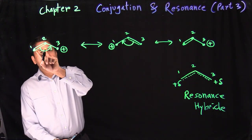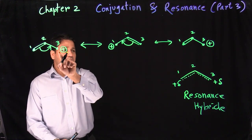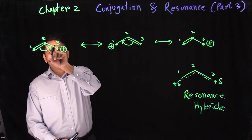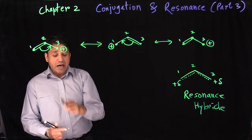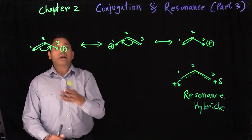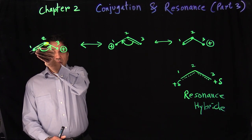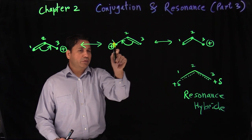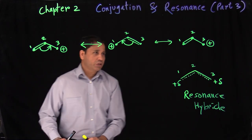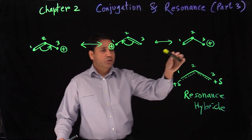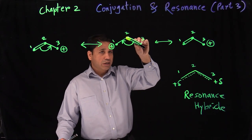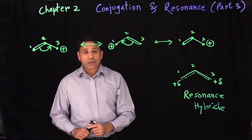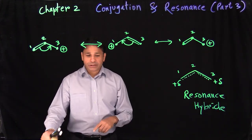Again, when you have a double, single, positive conjugation, you can only write resonance when you have a conjugation. There's only one way to do it: move the double bond between carbons two and three, and carbon one gets the plus charge. Then you have to get back to where you started — flip the double bond back between one and two. That is the one type of conjugation.